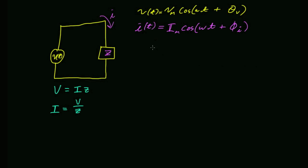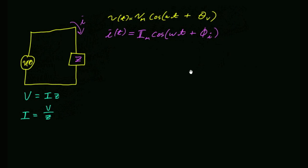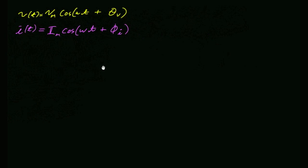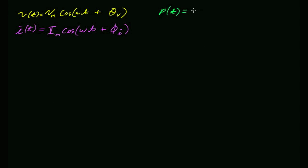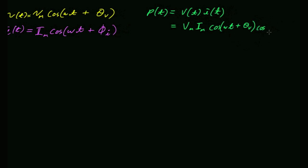So, power as a function of time is going to be voltage as a function of time times current as a function of time. Now I'm going to substitute and make a mess for myself. That's going to equal Vm·Im·cos(ωt + θV)·cos(ωt + θI). So far, so good? It's some sort of ugly nonsense, but let's see if we can simplify it a little bit.